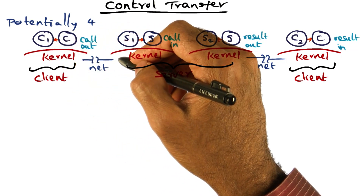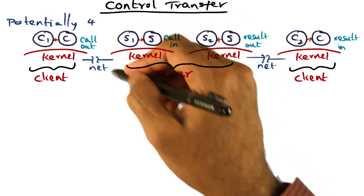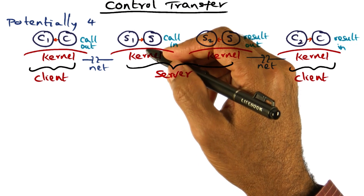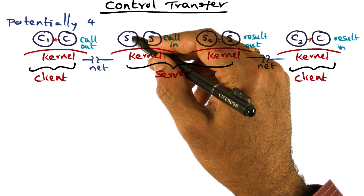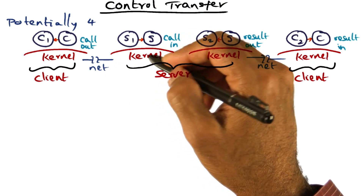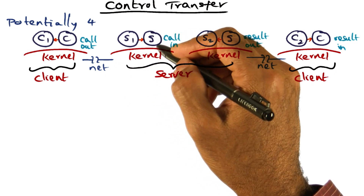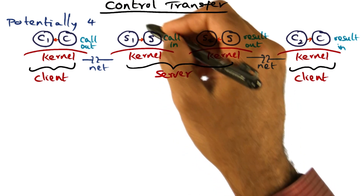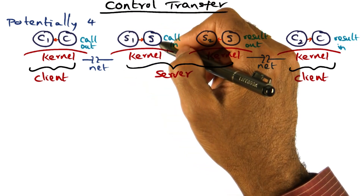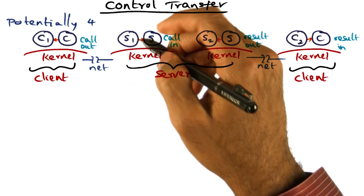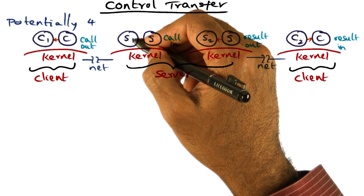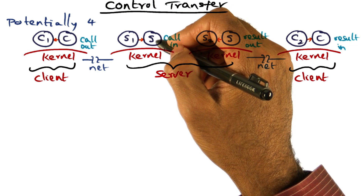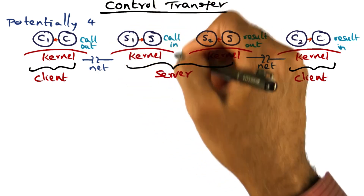The RPC call is sent out on the wire and reaches the server machine. When it reaches the server machine, the server is executing some arbitrary process — let's call it S1. When the call comes in, the kernel has to switch to the particular server process that is going to handle this incoming RPC call. So the operating system on the server machine switches from S1 to S in order to answer the incoming RPC call. That is the second context switch.